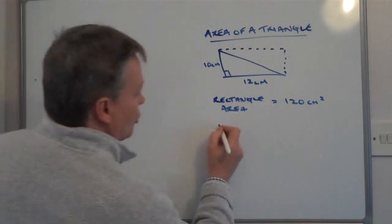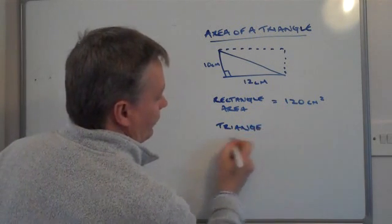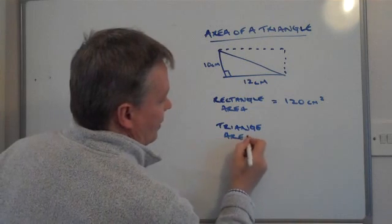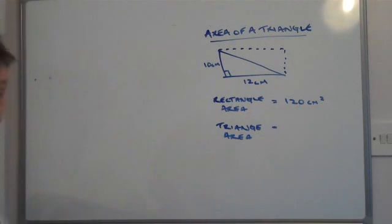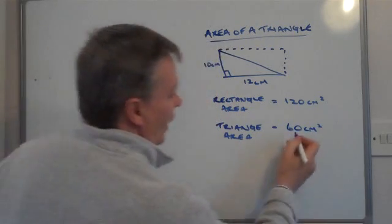So the triangle area is half of that 120, which is 60 centimeters squared.